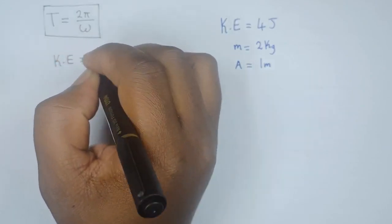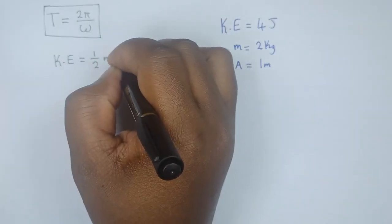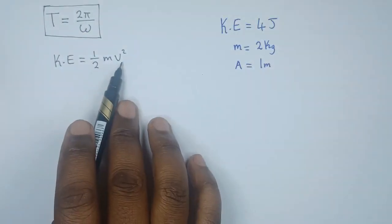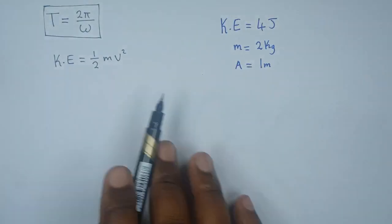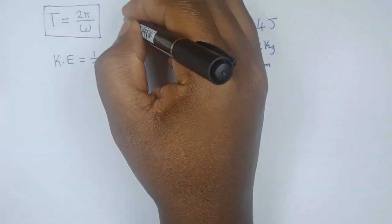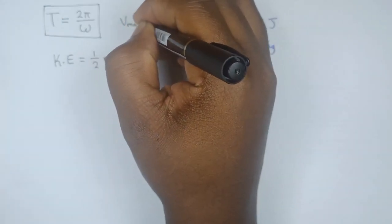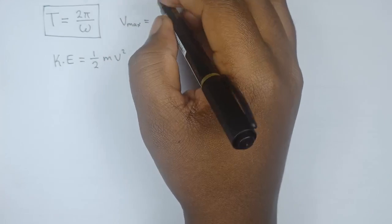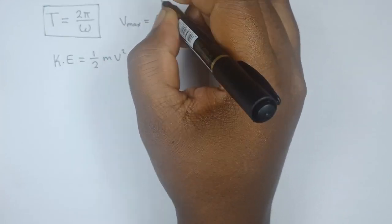The mass we already have, that's fine. Velocity, or the maximum velocity, is given by v_max = Aω, where A is amplitude multiplied by omega. So we have this as well.